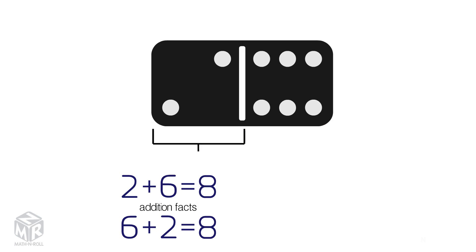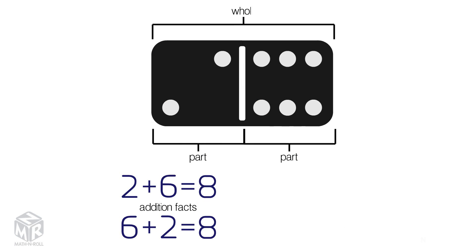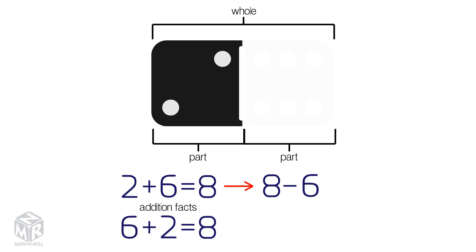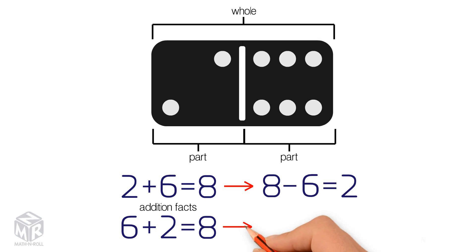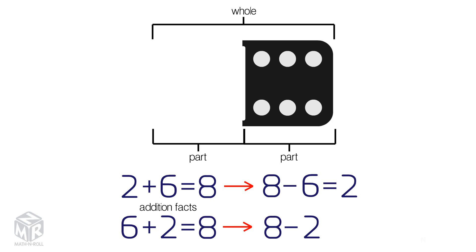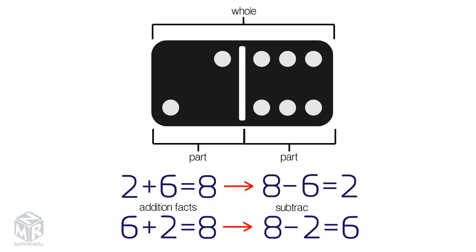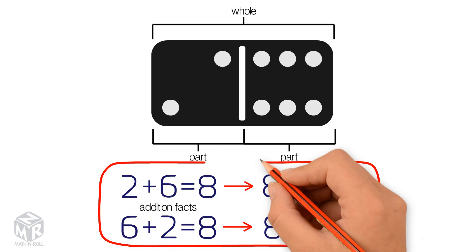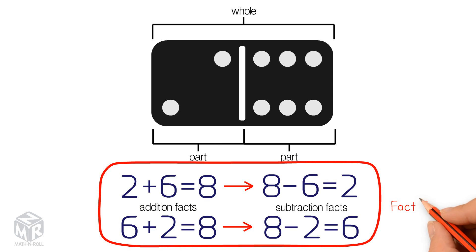Subtraction is the opposite of addition. We can subtract one part from the whole to get the other part. 8 minus 6 equals 2, and 8 minus 2 equals 6. These are the subtraction facts. These two addition facts and two subtraction facts make a fact family.